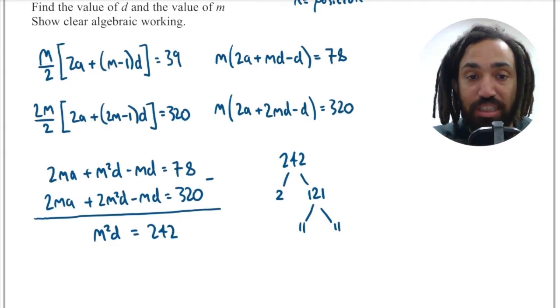So the only other possibility is that M squared is 121 which makes M equal to 11. And that's our final answer. We have that D must equal 2 and M must equal 11.